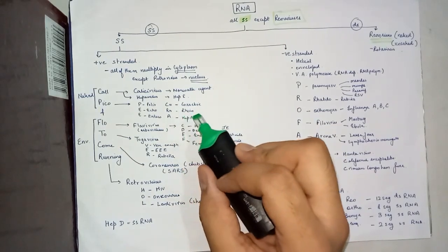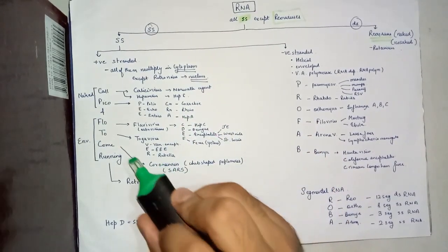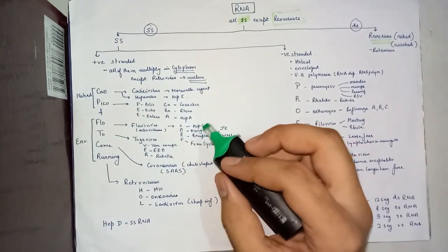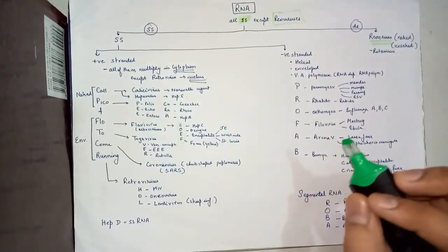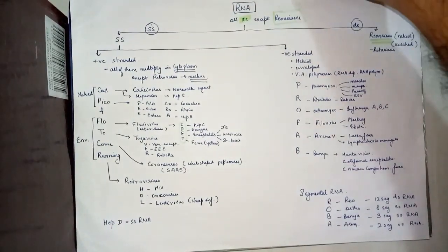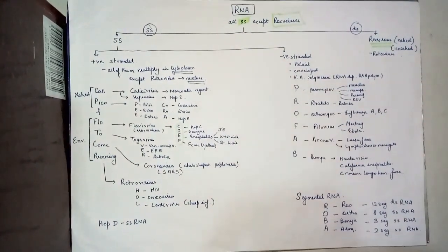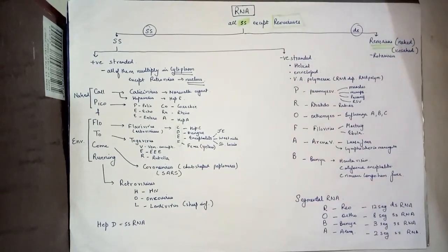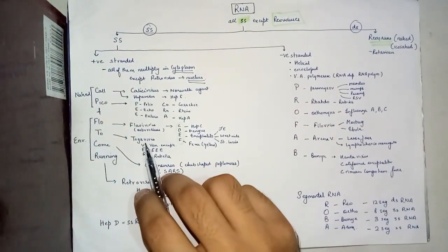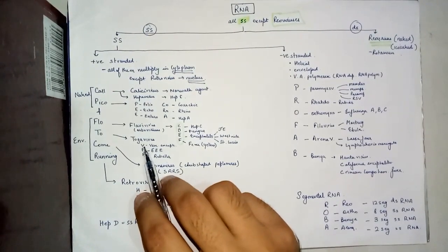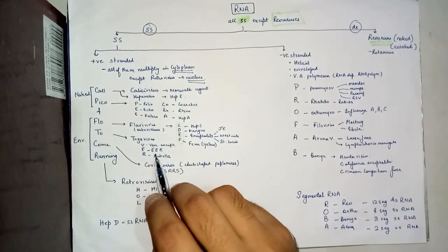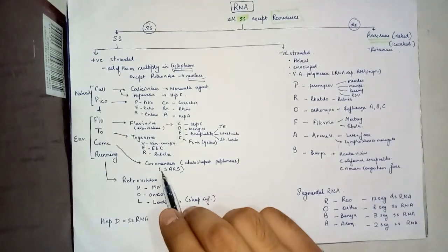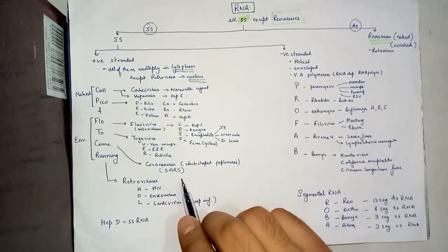Flo becomes flavivirus, and most of them are arboviruses. The mnemonic is CDEF: C includes hepatitis C, D is for dengue virus, E is for encephalitis and includes Japanese encephalitis, West Nile encephalitis, and St. Louis encephalitis, etc. F is for fever, which is yellow fever. To is for togaviruses, which includes VER: V is Venezuelan encephalitis, E is for equine eastern encephalitis, and R is for rubella.